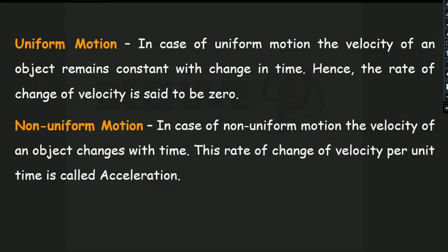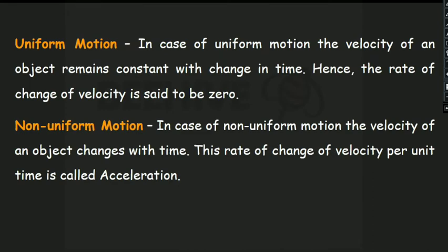Uniform motion and non-uniform motion: in the case of uniform motion, the velocity of an object remains constant, so the rate of change of velocity is zero. If an object covers equal distances in equal time intervals, it is said to be uniform motion. Hence acceleration in uniform motion is zero.